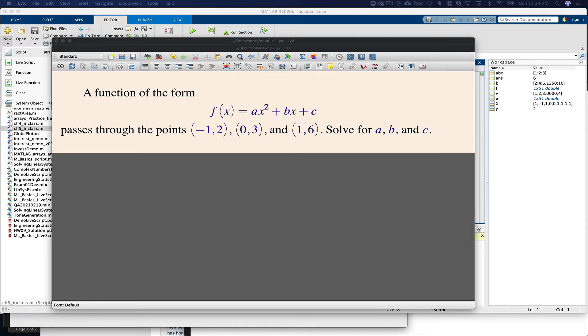Here's a problem I'm going to show you how to solve in MATLAB. We have a function of a given form here, and we're told that it passes through a set of points, and we're then asked to solve for the coefficients a, b, and c.